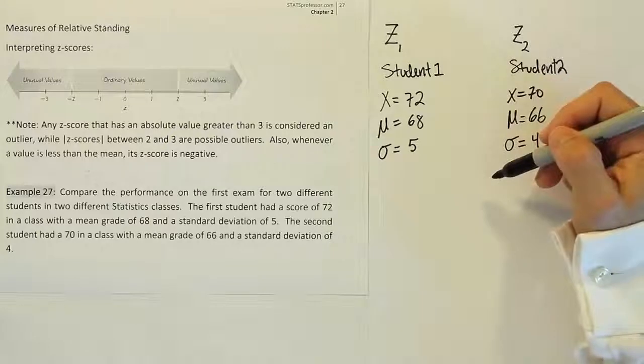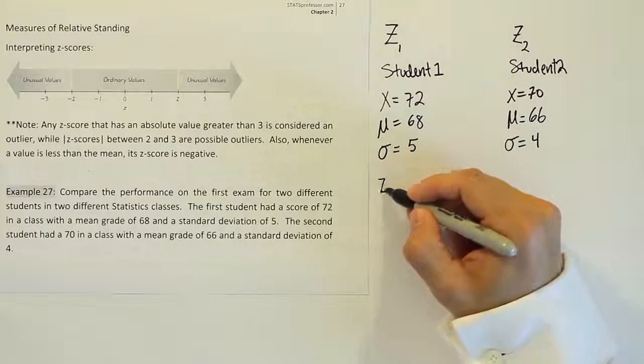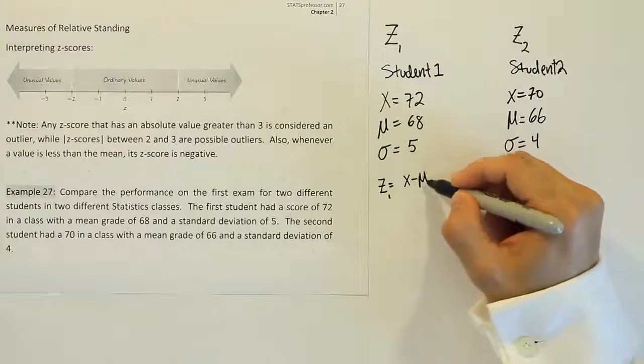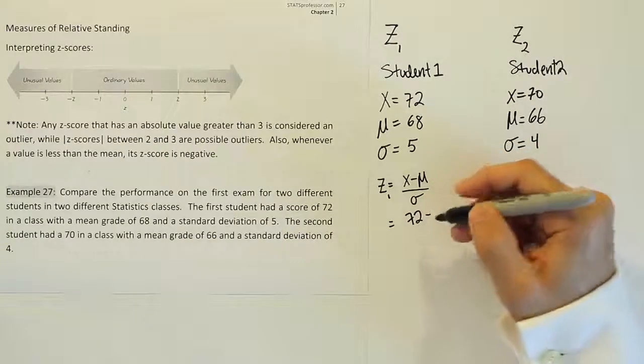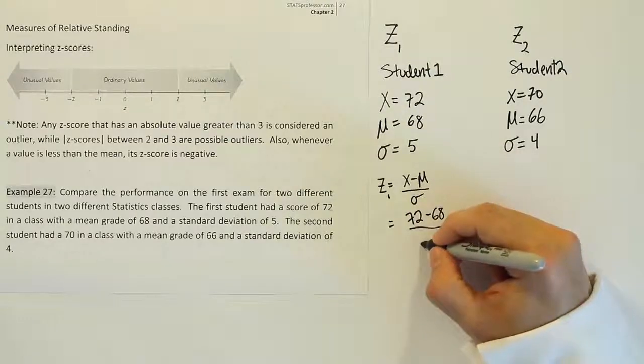Okay, so there's your two sets of data. Now, the z-score for the first student will be x minus the mean over sigma. x here being 72, the mean being 68, and the standard deviation is 5.